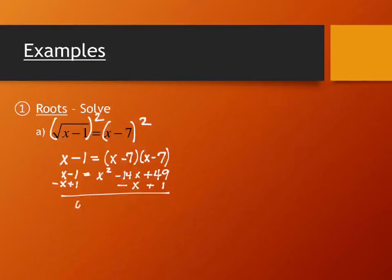So I have 0 equals x squared minus 15x plus 50. And there are three basic forms that we found out last section that we can use to solve a quadratic equation. Factoring, completing the square, and the quadratic formula. Factoring doesn't always work. Completing the square and quadratic formula do.